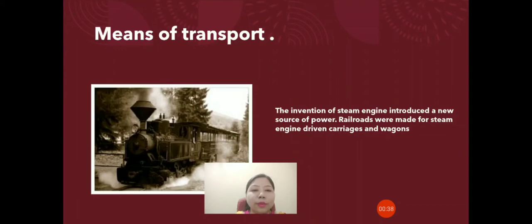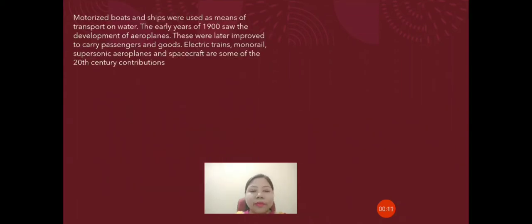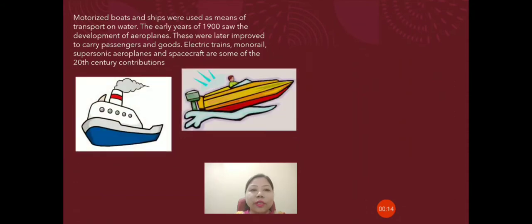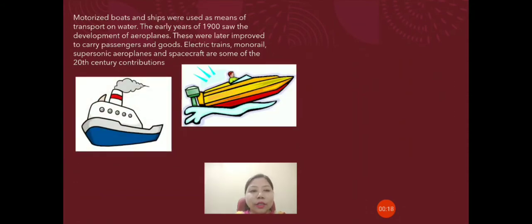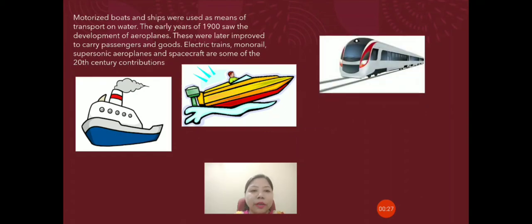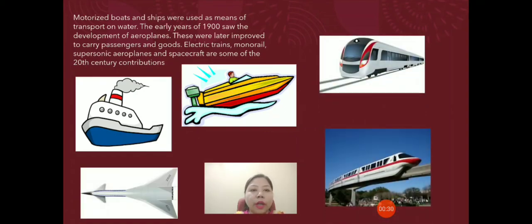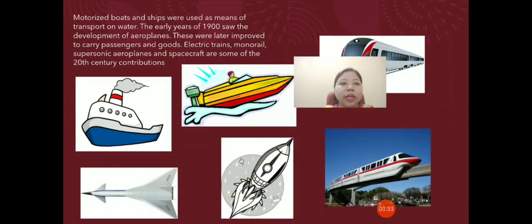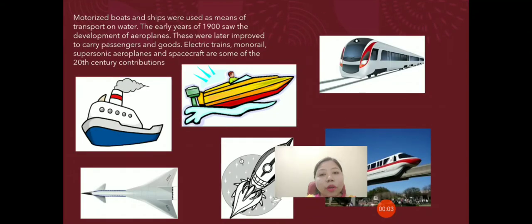Railroads were made for steam-engine-driven carriages and wagons. Motorized boats and ships were used as means of transport on water. The early years of 1900 saw the development of aeroplanes, which were later improved to carry passengers and goods. Electric trains, monorail, supersonic aeroplanes, spacecraft, and spaceships are some of the 20th century's contributions. In this way, modes of transport came into existence and now help us move from one place to another, covering long distances.